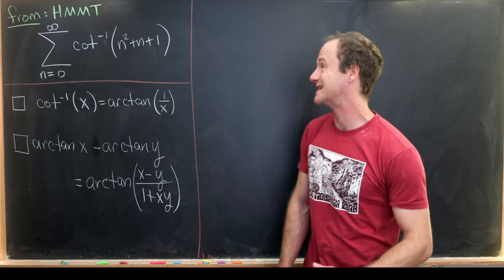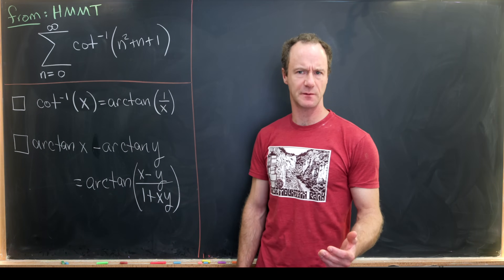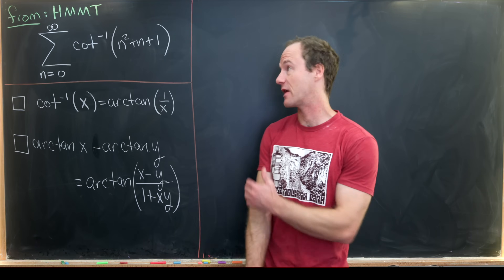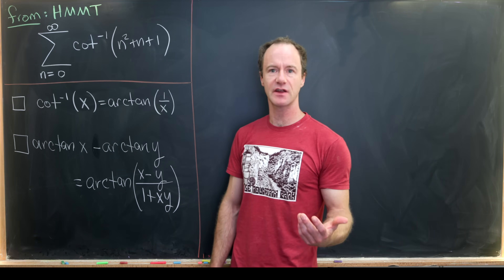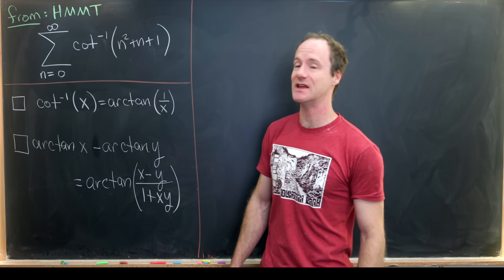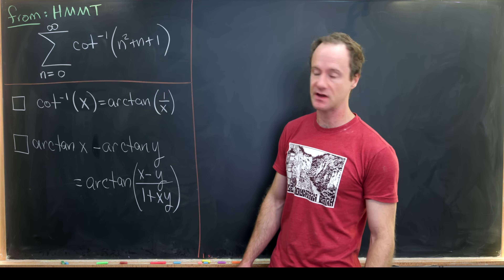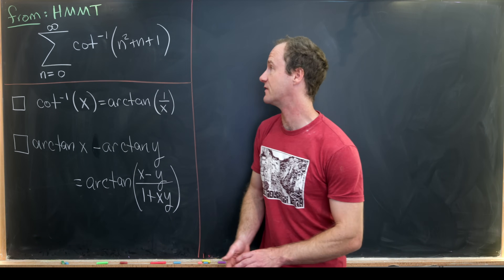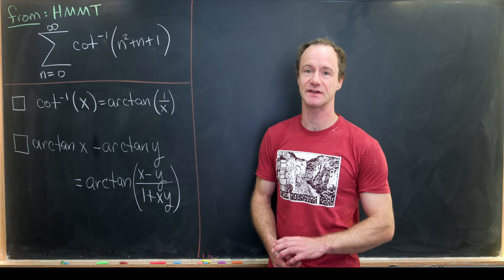Today we're going to evaluate a nice infinite series that comes from the problem page of the Harvard-MIT Math Tournament. In particular, what we want to do is calculate the sum as n goes from zero to infinity of the inverse cotangent of n squared plus n plus one.